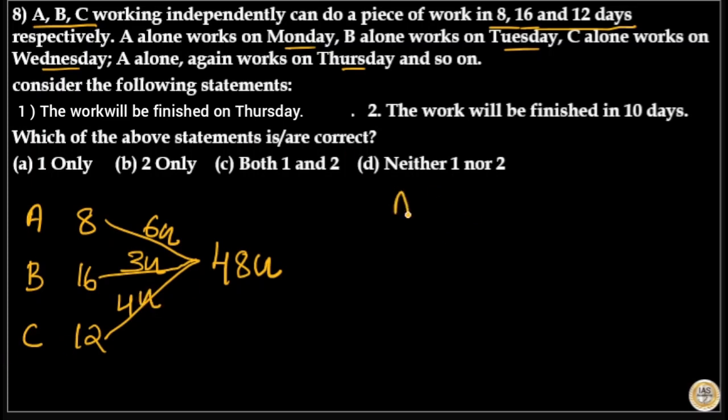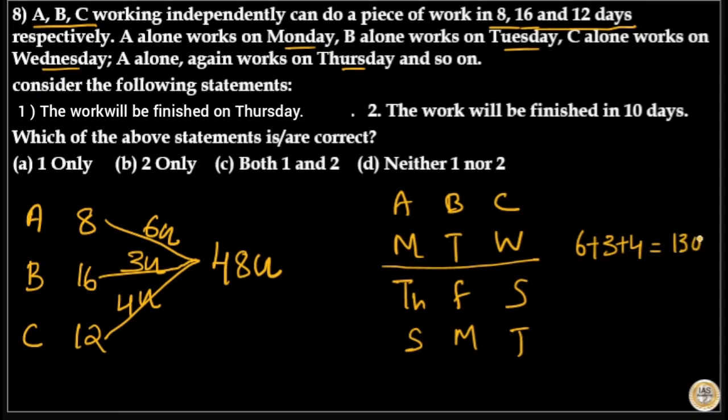A, B, C work Monday, Tuesday, Wednesday respectively, then again on Thursday, Friday, Saturday, again on Sunday, Monday, Tuesday. In 3 days, work completed is 6 units plus 3 units plus 4 units, that is 13 units. In 3 days, 13 units of work is completed. That is 13 times 3 is equal to 39 units.